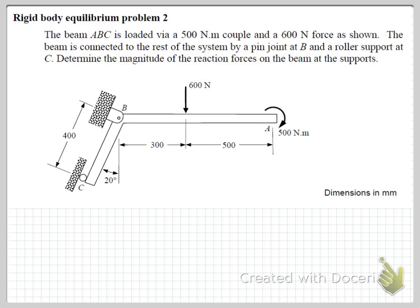We're told that it's loaded by a 500 Nm couple at the end here, and we also have a 600 N force acting down. The beam is connected to the rest of the system. Typically, a problem like this, you would say that the beam or component is attached to ground here. I've just said here that it doesn't have to be ground, it can be some other part of a mechanical structural system. In this particular connection, we have at B here a pin connection, and at C we have a roller support. We're asked to determine the magnitude of the reaction forces on the beam at these supports.